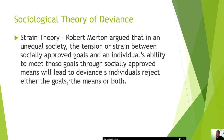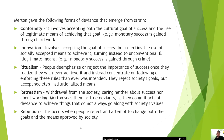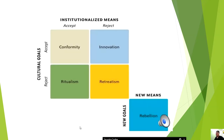Strain theory has specific applications in criminology. Robert Merton, the proponent, argued that in an unequal society, the tension or strain between socially approved goals and an individual's ability to meet those goals through socially approved means will lead to deviance. Individuals reject either the goals, the means, or both. There are two aspects: cultural goals — the individual's personal value system — and institutionalized means, which represent the structure such as the government.